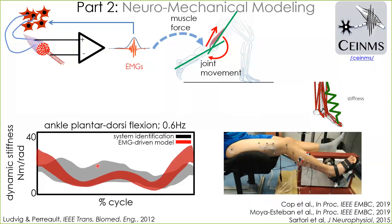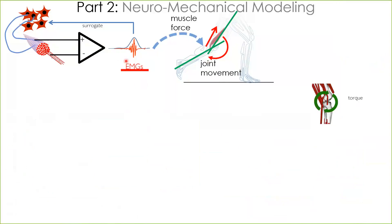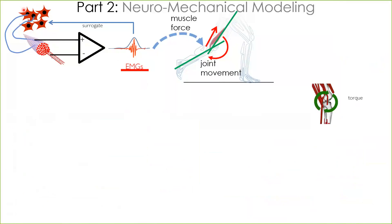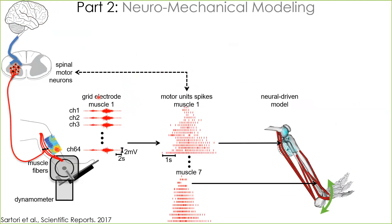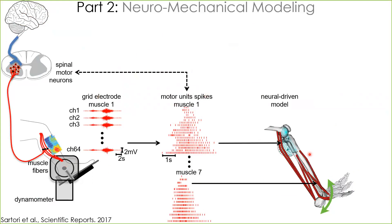So far I've shown examples using EMG linear envelopes to drive musculoskeletal models. However, EMG linear envelopes represent only a surrogate of neural activity generated by alpha motor neurons. The idea is to go one step further and drive these models using the spike trains produced by alpha motor neurons directly. I will show how we do this for the estimation of joint torque, and how doing so gives us the possibility of understanding how ankle torque is controlled by multiple neurons simultaneously.